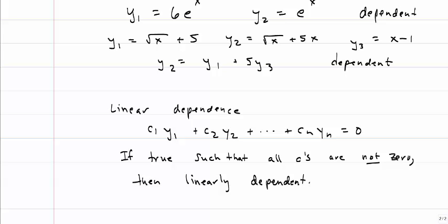c1 y1 plus c2 y2 all the way to cn yn, and that equals zero, if it's true that you can come up with a relationship between y1 y2 through yn, such that all the c's are not zero, then they're actually linearly dependent. Just like I have in the example above, y2 is equal to y1 plus 5 times y3.